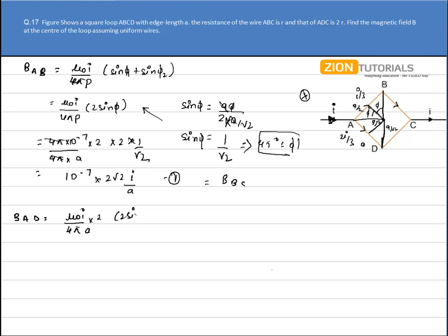Again 2 sine phi, so solving this I get the answer as 10 to the power minus 7 into 2 root 2 into the value of i, that is 2i by 3, divided by A. I haven't substituted the value of i yet - the i is i by 3. This is the magnetic field due to AD, and same for magnetic field due to DC, but the direction here is opposite, that is out of the plane upward.